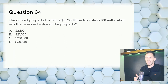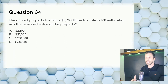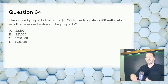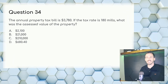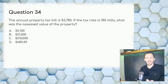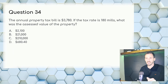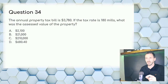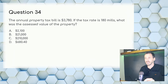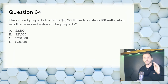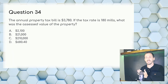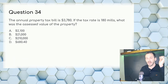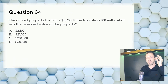Question 34: The annual property tax bill is $3,780. If the tax rate is 180 mills, what was the assessed value? With mills, move the decimal over three spaces: 180 mills = 0.180. Then $3,780 ÷ 0.180 = assessed value of $21,000. Answer: B, $21,000.